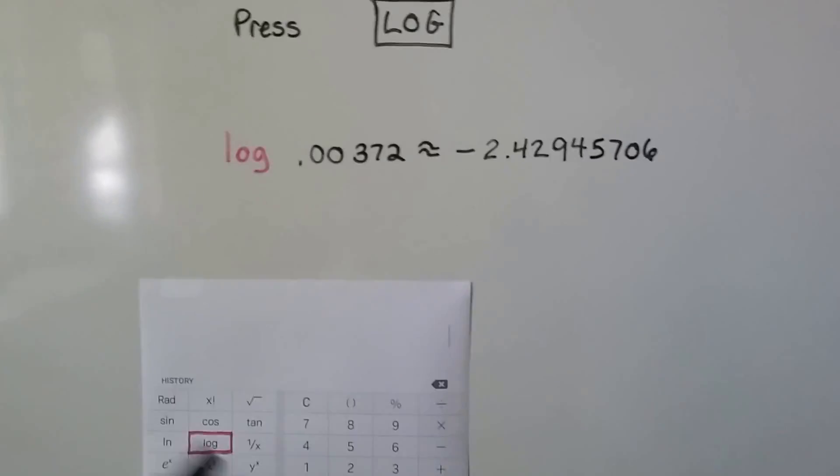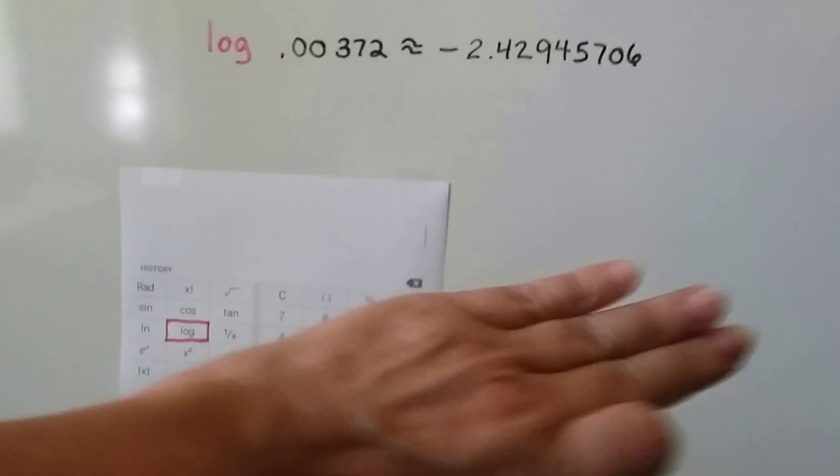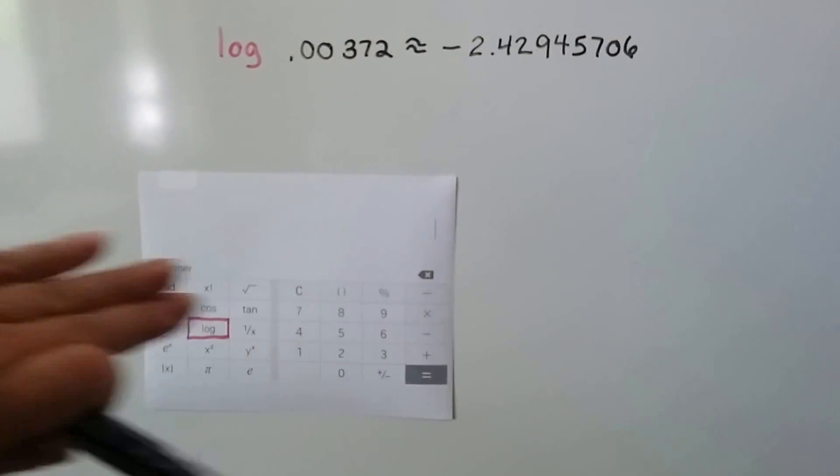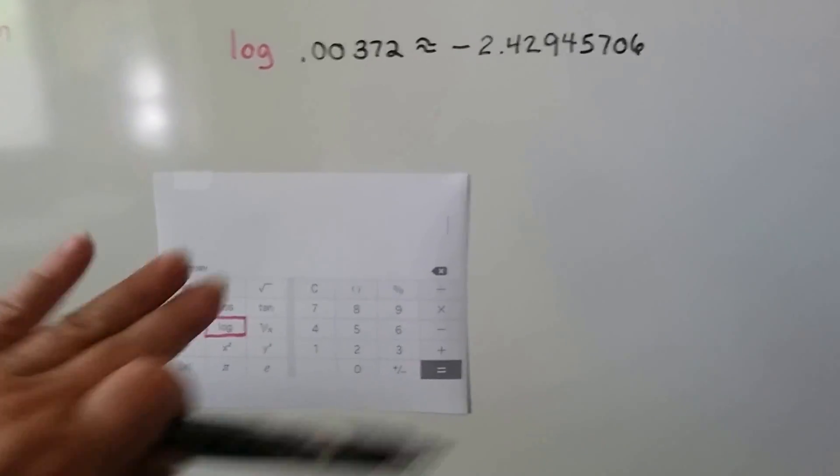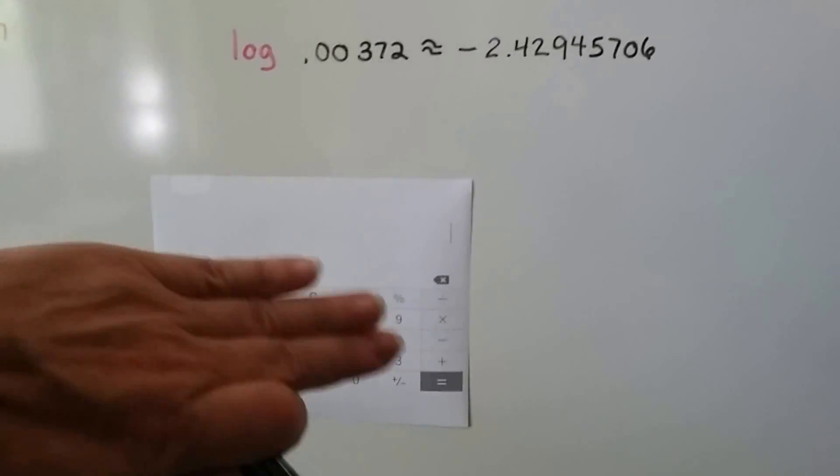Now you can also use your phone. If you turn your phone horizontally this way, most phones have a scientific calculator in them. You have it upright vertically, it's just going to be a simple calculator. Try turning it sideways.